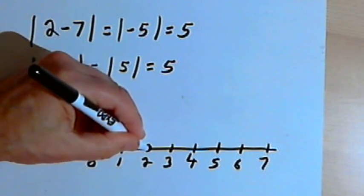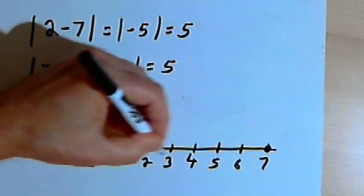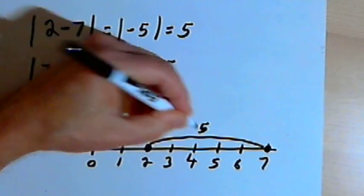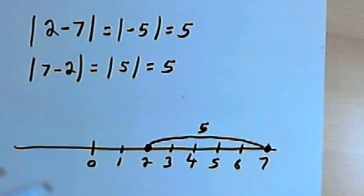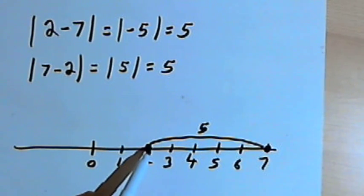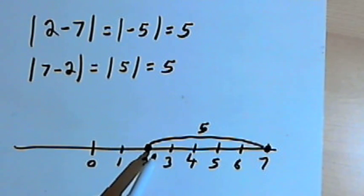And if I mark the 2 and mark the 7, the distance between 2 and 7 is 5. It wouldn't matter whether I started at the 2 and counted up to the 7 or started at the 7 and counted down to the 2. If I'm talking about distance, distance is just a positive number.